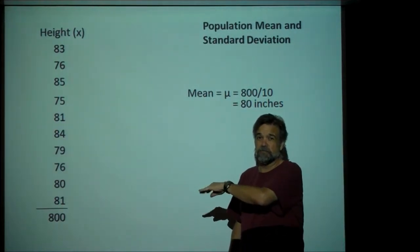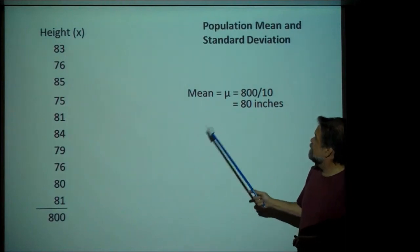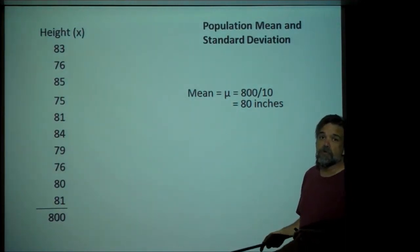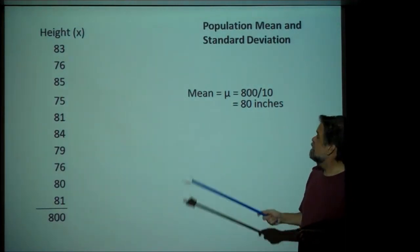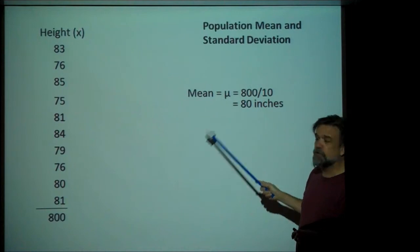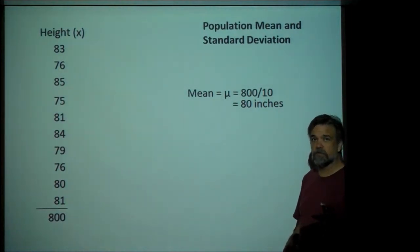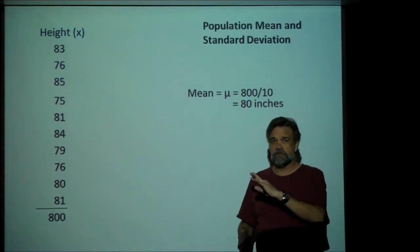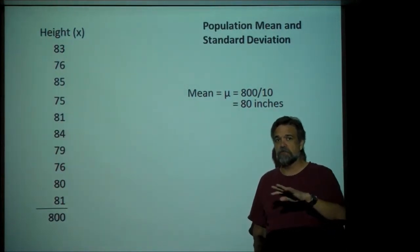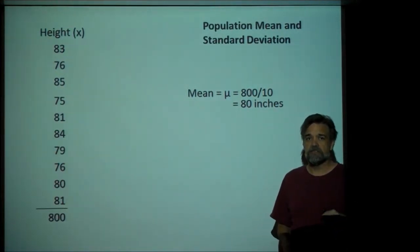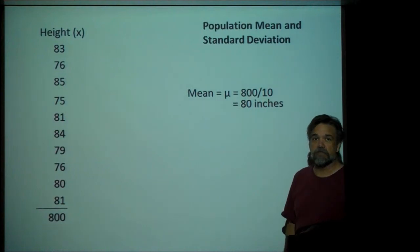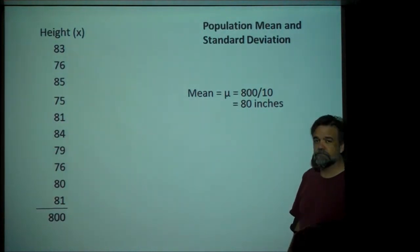This little guy right here is the Greek letter mu. This is the symbol that we generally use for the population mean. Remember, in an earlier video we talked about the difference between population means and sample means. Mu is what we use for the population mean.